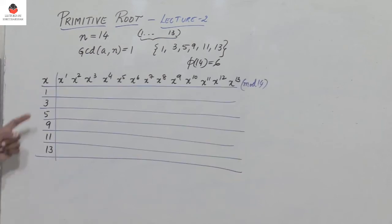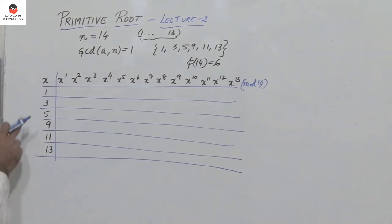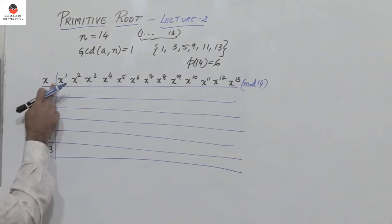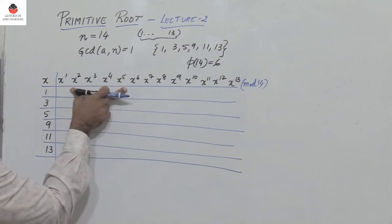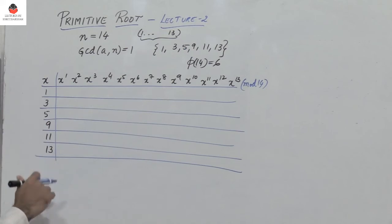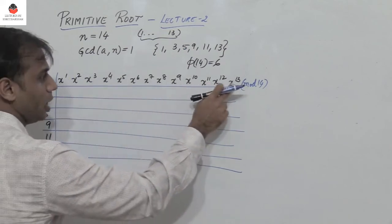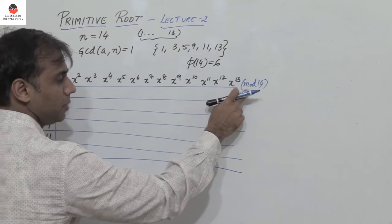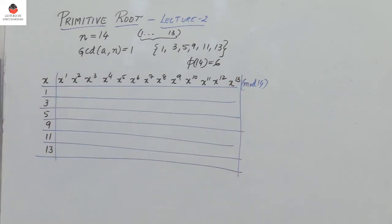Consider these numbers which are relatively prime to 14 and raise them to powers 1 to 6. Raising to 1 through 6 is enough because we only have 6 numbers which are relatively prime to 14. But I have written x power 1 to x power 30 to find all the values in mod 14.